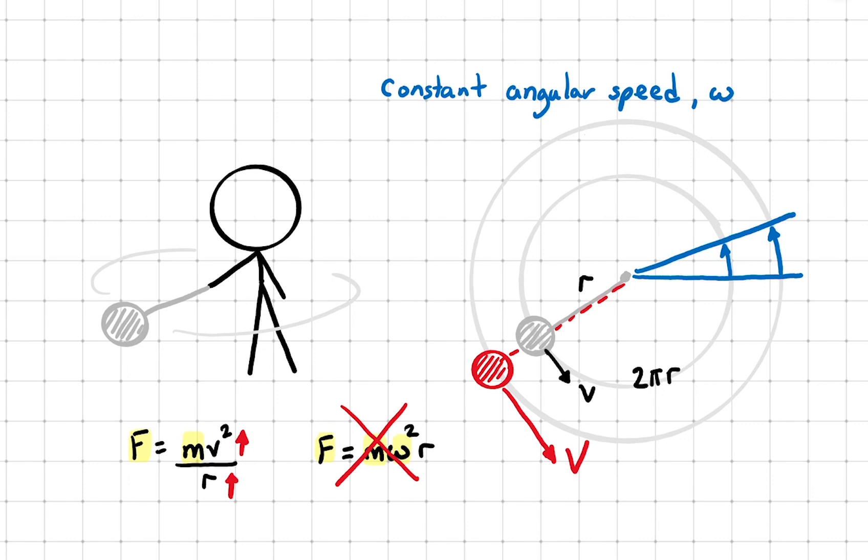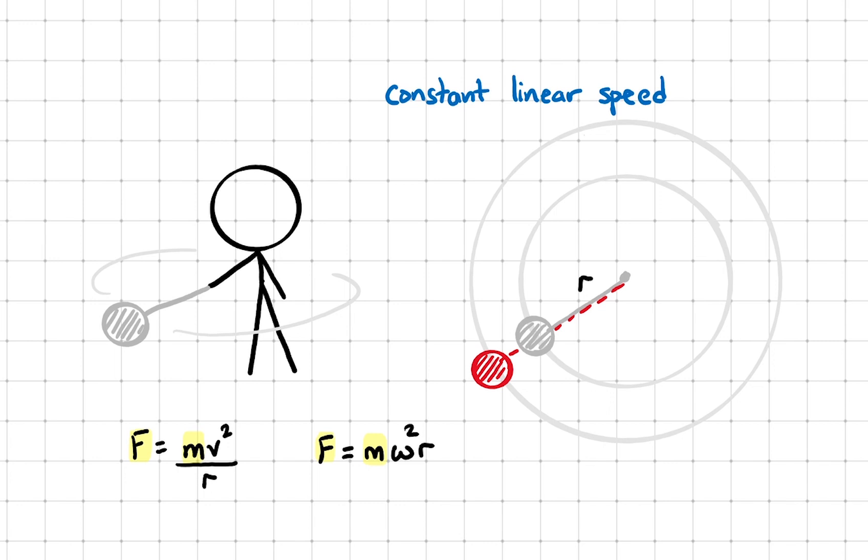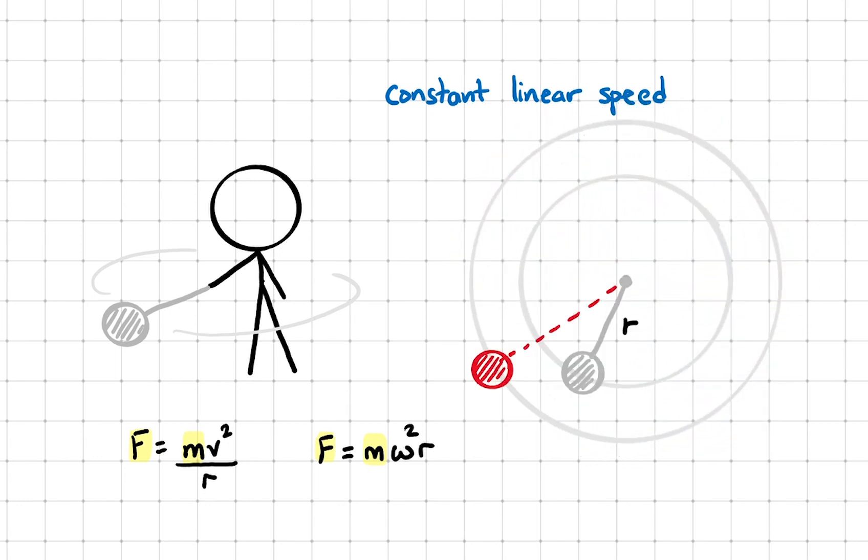Let's change things up a little and this time, we keep linear speed the same. The second ball will lag behind because of its larger circular path. In the same amount of time, the angle that the second ball can sweep is less than the first ball. That tells us, as the radius increases, the angular speed decreases.